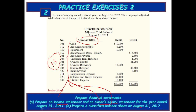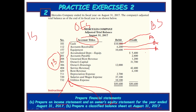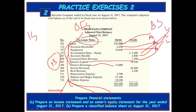Cash is a balance sheet asset item. Accounts receivable is a balance sheet asset item. Equipment is a balance sheet asset item. Accumulated depreciation is a balance sheet liability item. Accounts payable is a balance sheet liability item. Unearned rent revenue is also a balance sheet liability item. Owner's capital and owner's drawings are owner's equity items. Service revenue and rent revenue are the two revenue items on the income statement. The remaining three items are expenses related to the income statement.